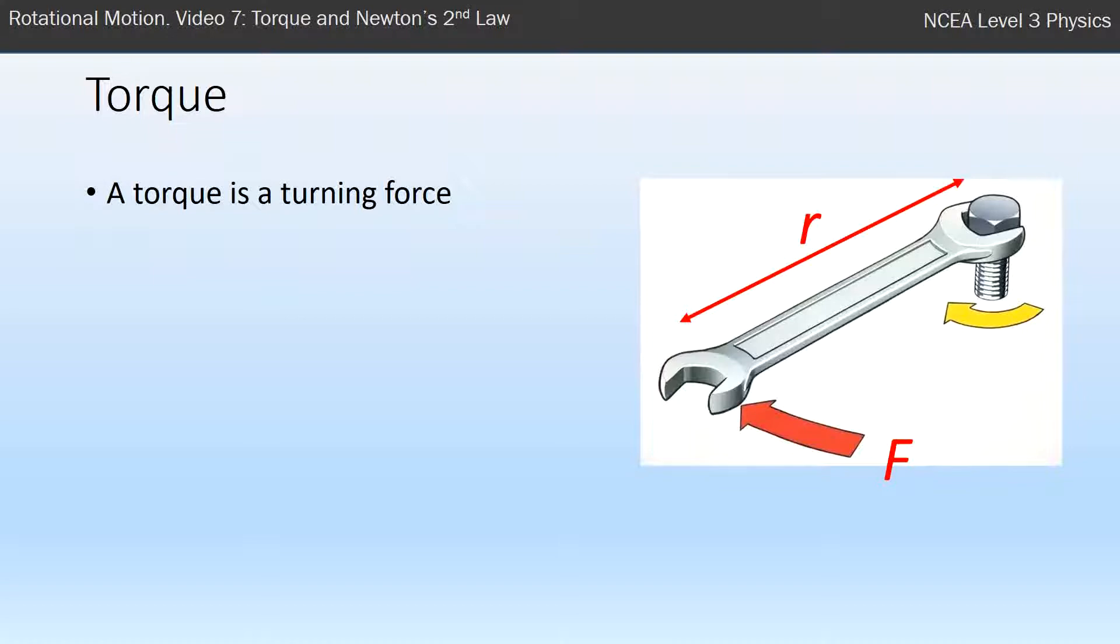A torque is best described as the rotational equivalent of a force. It's a force that tries to rotate something or tries to turn something. The symbol for torque is Greek letter tau, and the way we calculate it is force times the distance to the turning point, given the symbol R.